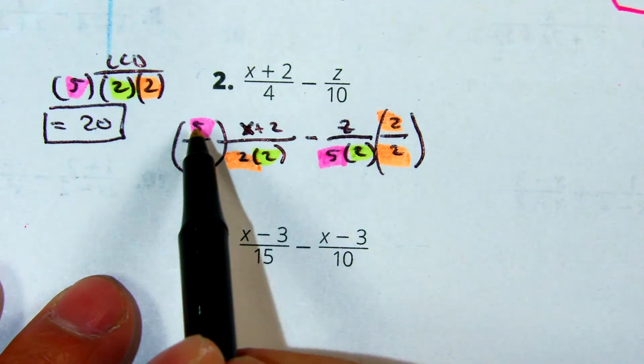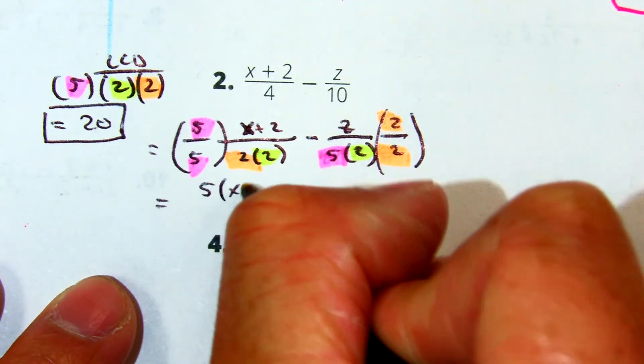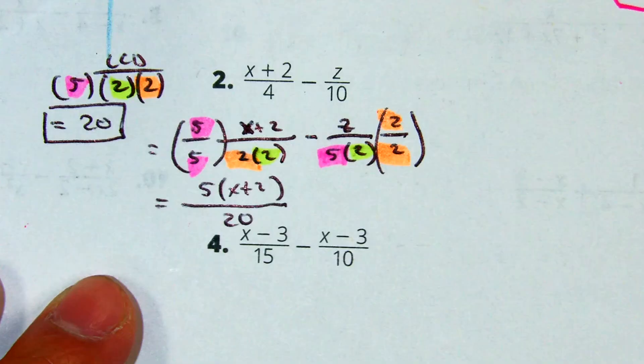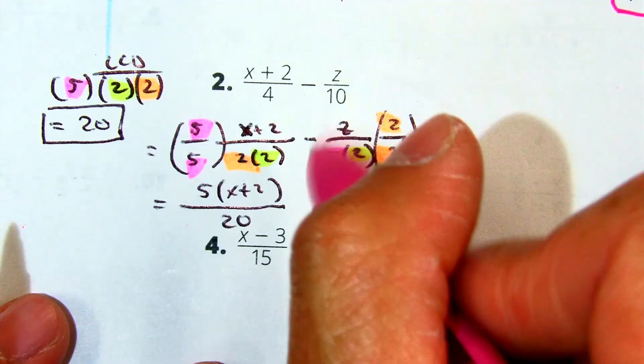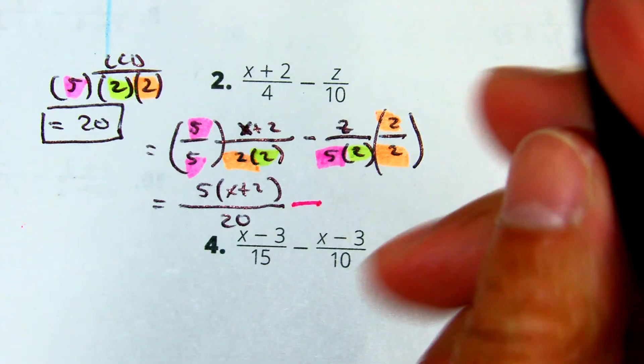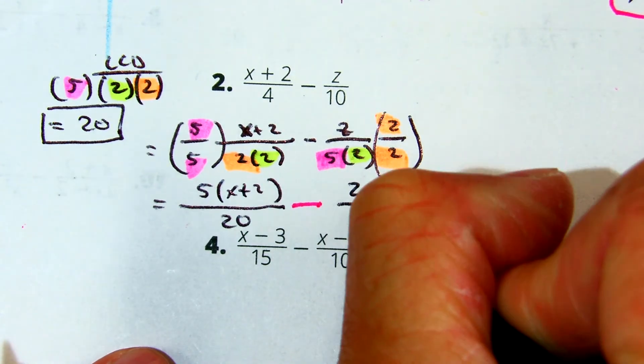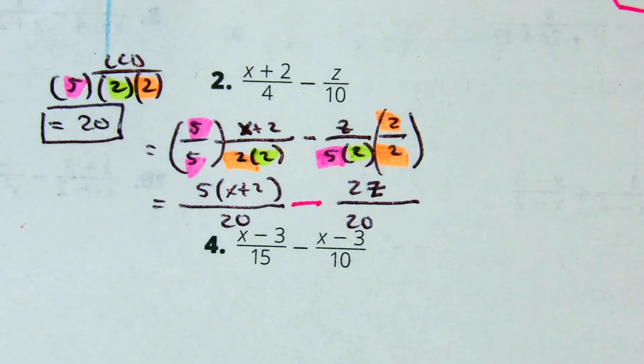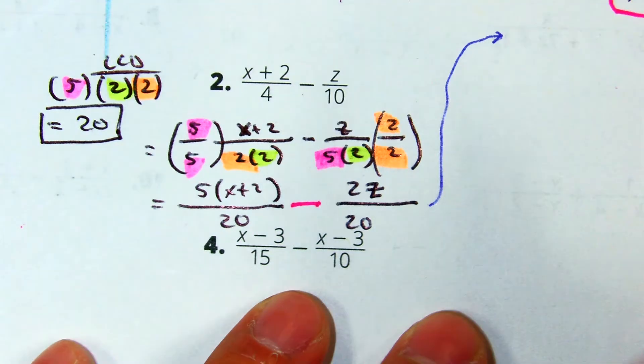So essentially, I'm going to have 5 times the quantity x plus 2, all over 20. And over here, I'm going to have subtraction of 2 times z. My z's I like to differentiate by putting the line through it all over 20. Carnegie didn't do a good job of giving us lots of space. I'm just going to move up here.